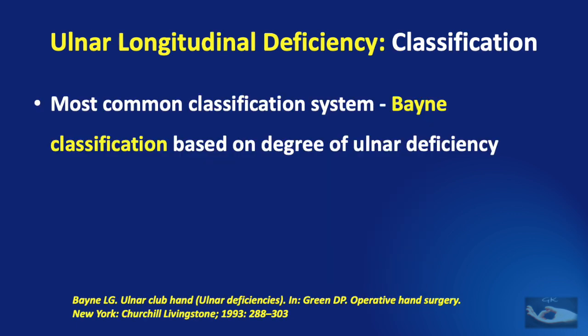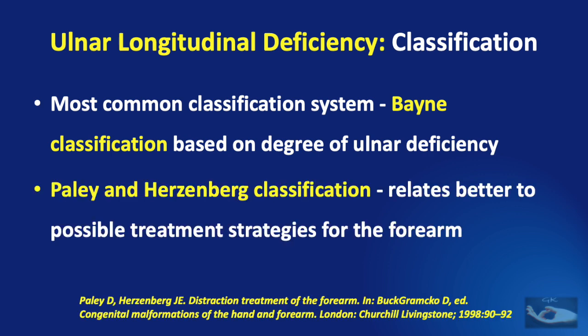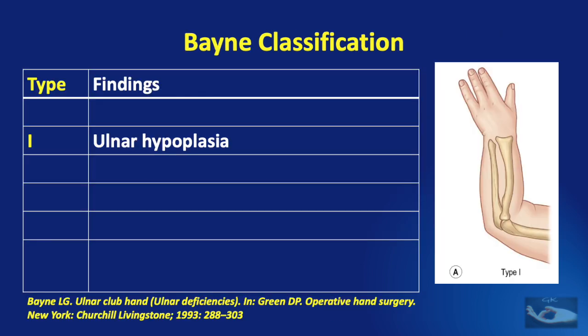There are many classification systems available for ulnar longitudinal deficiency. The most common is by Bayne, which is based on the degree of ulnar deficiency and radiological evaluation. Another classification proposed by Paley and Herzenberg relates better to possible treatment strategies for the forearm. We shall see the Bayne classification in detail. According to the original Bayne classification there were four types.